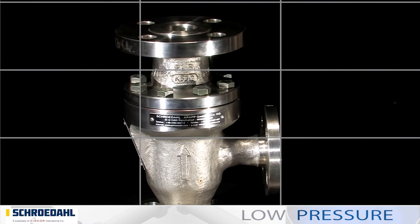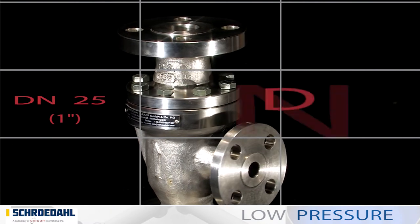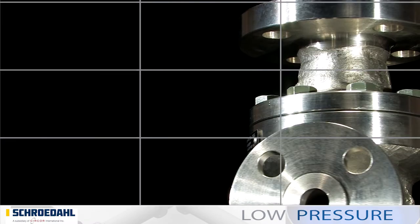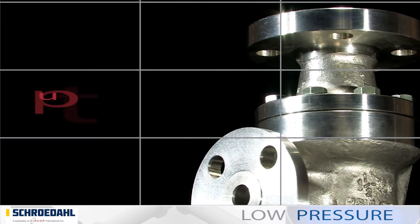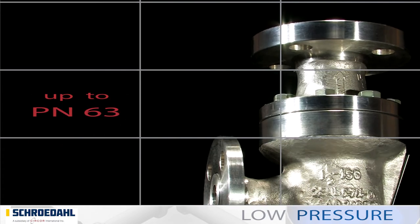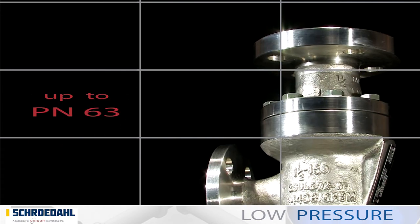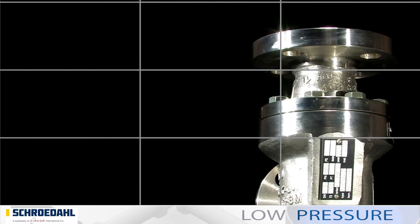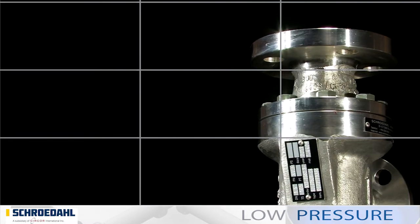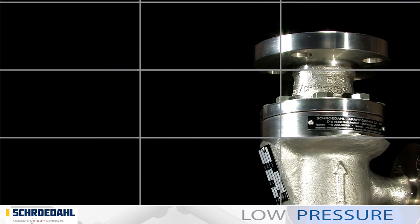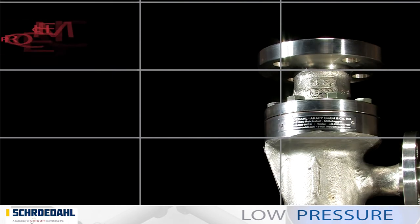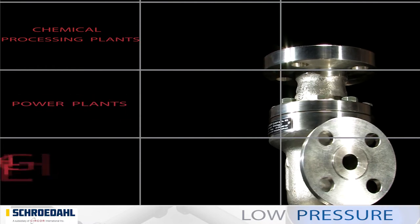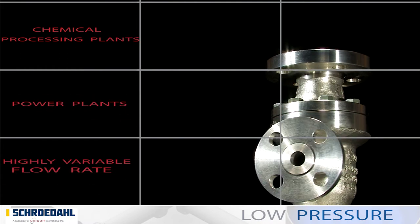The nominal width range is from DN25 to a maximum of DN250. The pressure stage of the SUL is designed up to PN63. The range of application of the SUL valve is extended by the largest possible flow rates. Our SUL is the ideal and price efficient valve for modern chemical processing plants and power plants, where a highly variable flow rate is part of the daily business.